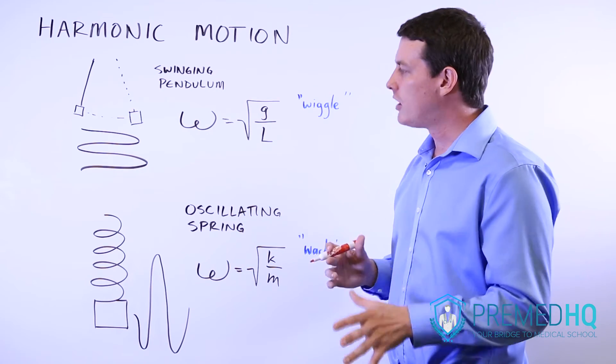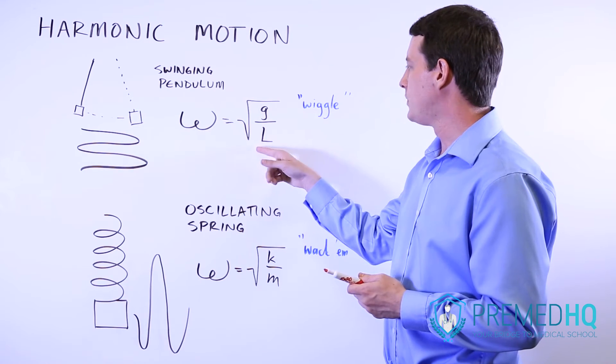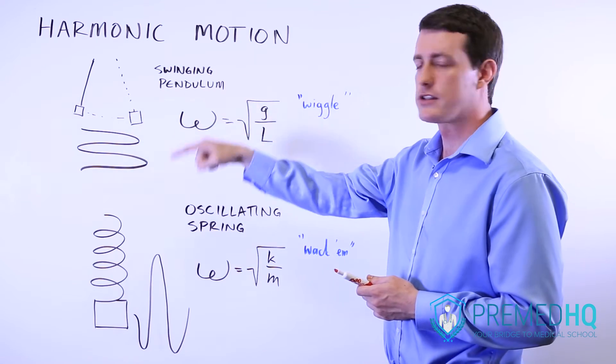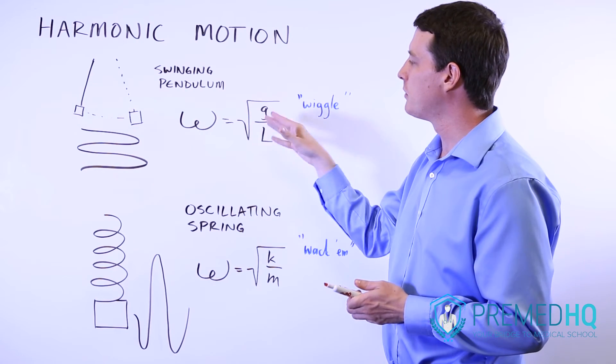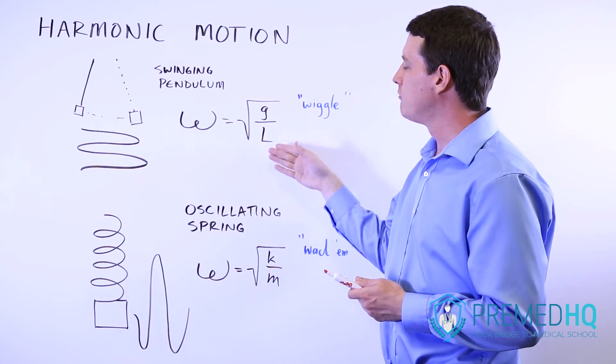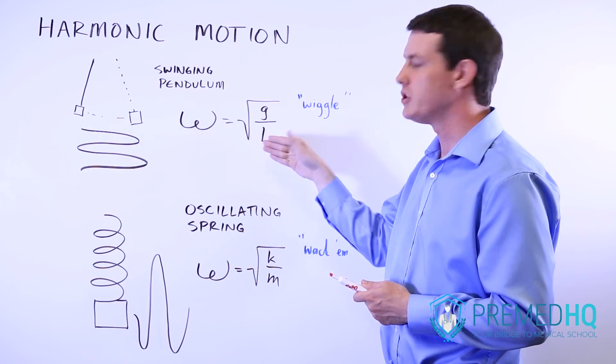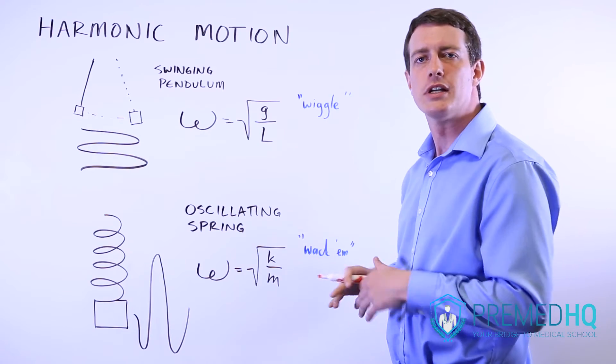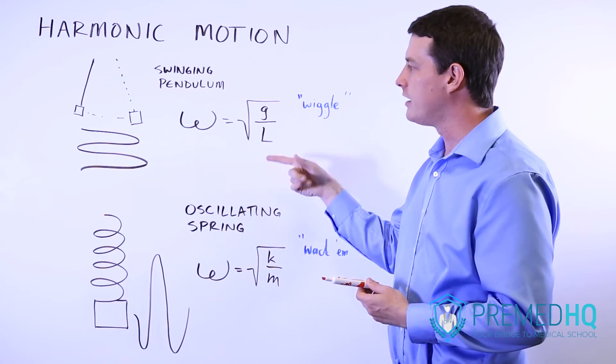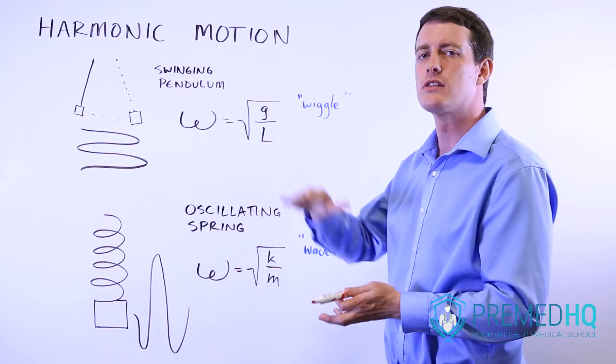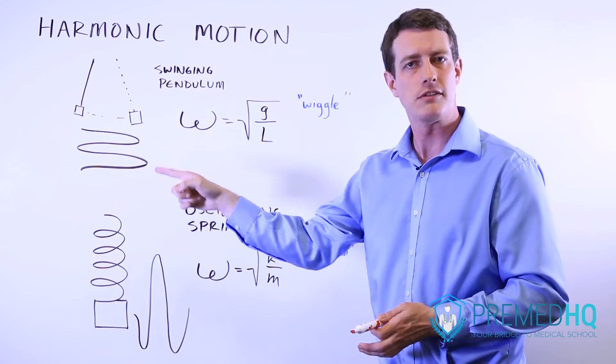So what you can be responsible for is realizing that if you were to, for example, increase the length of the string by a factor of four, because we're dealing with a square root, that would really only have the impact of dividing it in half, dividing it by two, because two is the square root of four. So realize that there is a square root involved, and also realize that the L is in the denominator. So if you make the string longer, you reduce the angular frequency of this waveform.